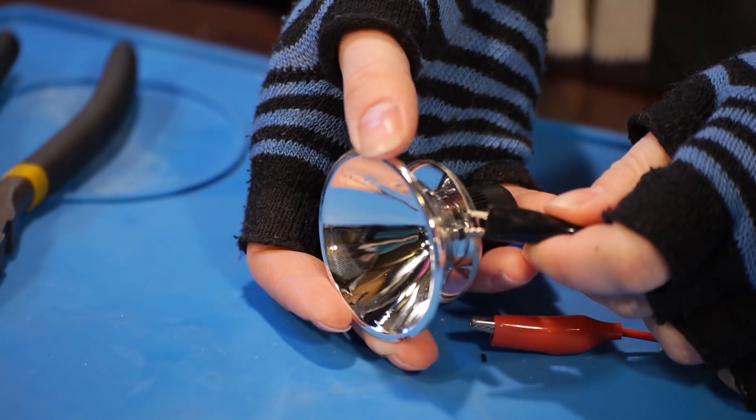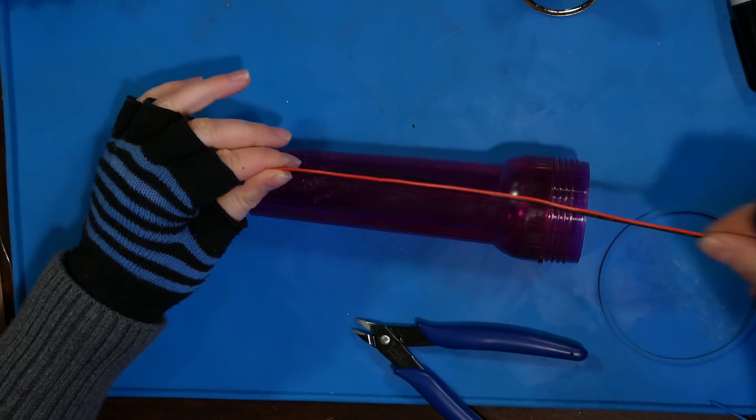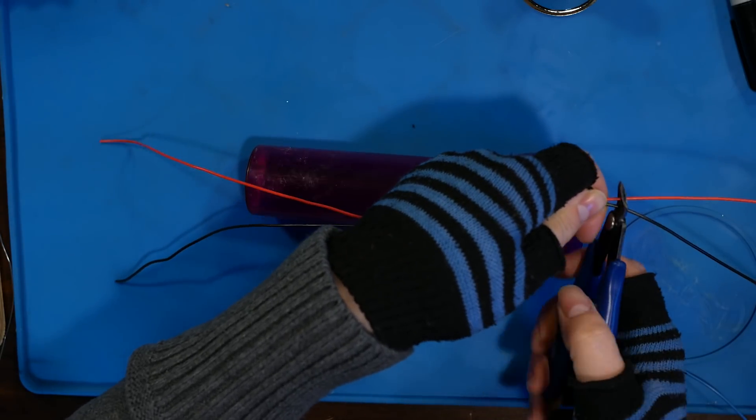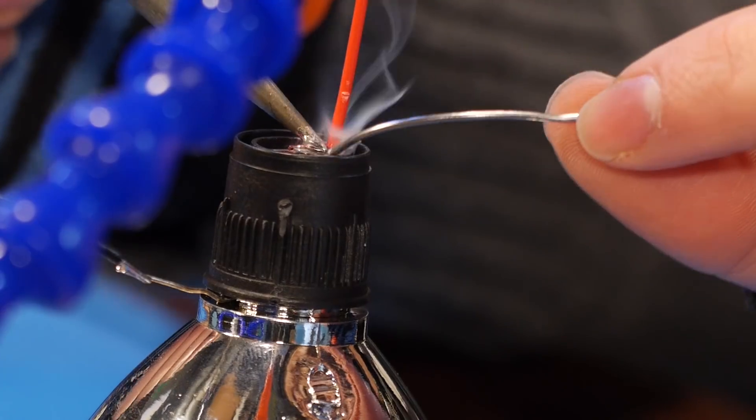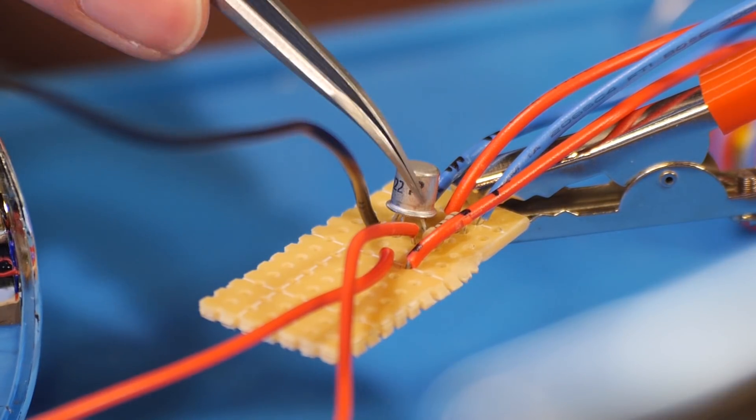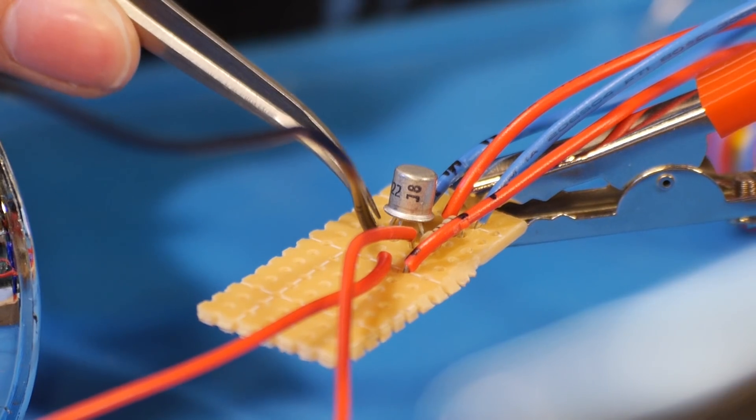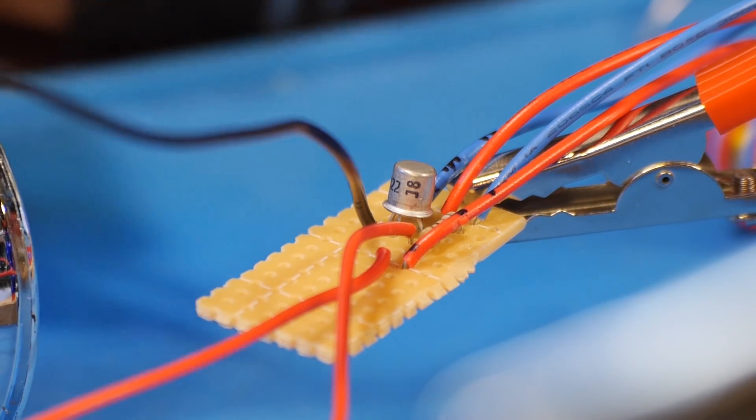Figure out the positive and negative leads of the LED and mark them. Solder long red and black wires to the LED. Make sure these wires are the length of the flashlight plus about three inches. The positive red wire of the LED is going to go to the collector of the transistor and the black negative wire of the LED is going to go to the emitter, which is the one with the tab.